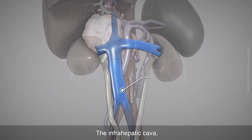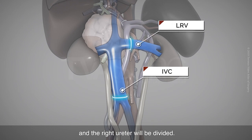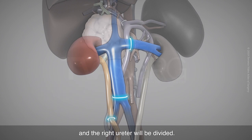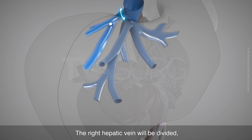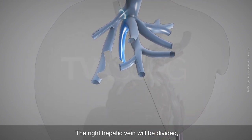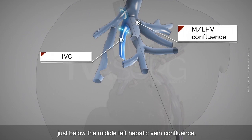The infrahepatic cava and the left renal vein will be divided, and the right ureter will be divided. The right hepatic vein will be divided, followed by division of the retrohepatic IVC just below the middle-left hepatic vein confluence, and the specimen will be removed.